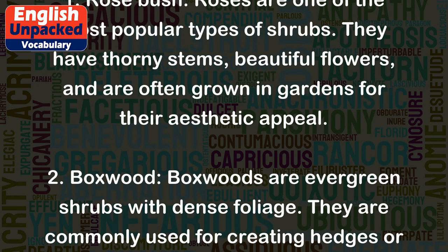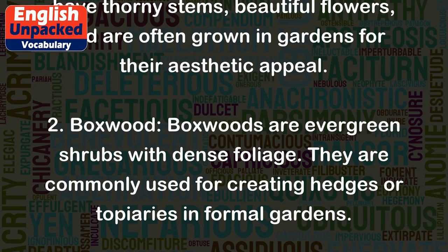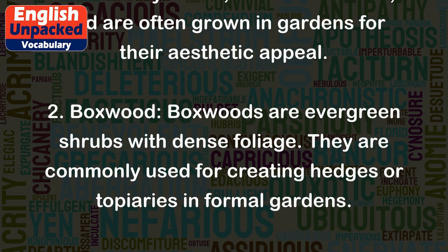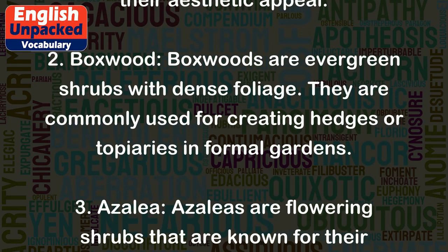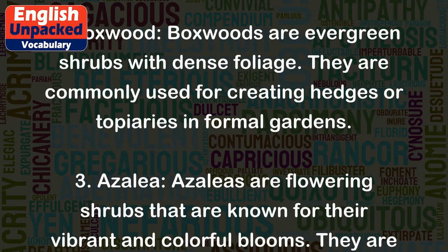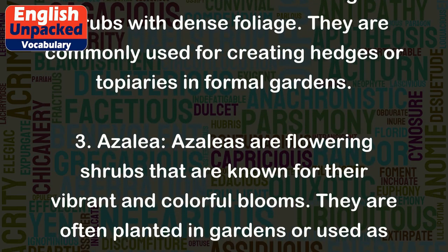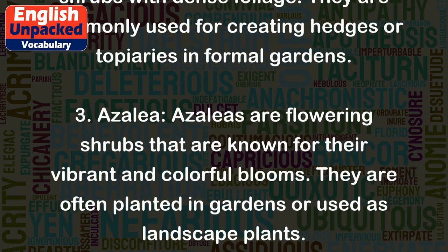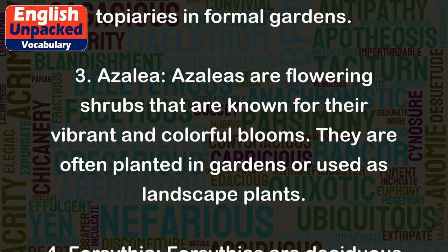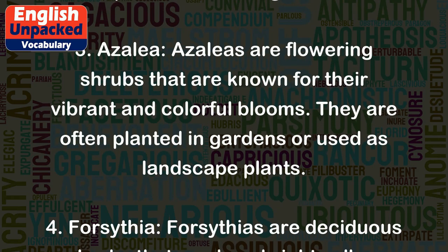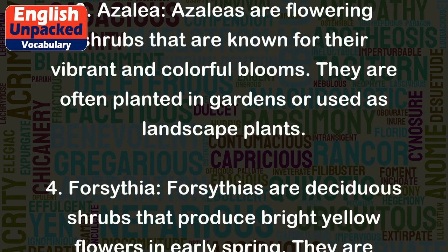2. Boxwood. Boxwoods are evergreen shrubs with dense foliage. They are commonly used for creating hedges or topiaries in formal gardens. 3. Azalea. Azaleas are flowering shrubs that are known for their vibrant and colorful blooms. They are often planted in gardens or used as landscape plants.